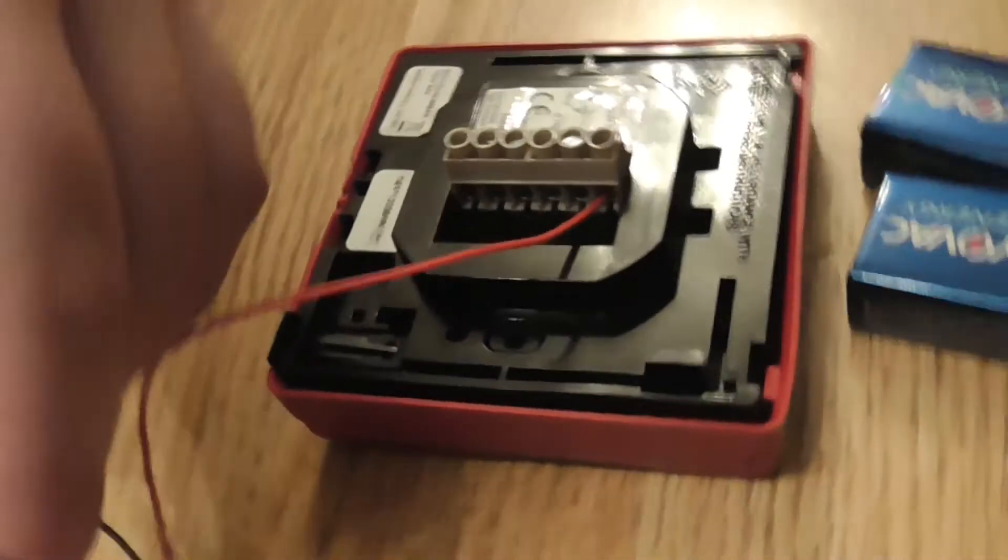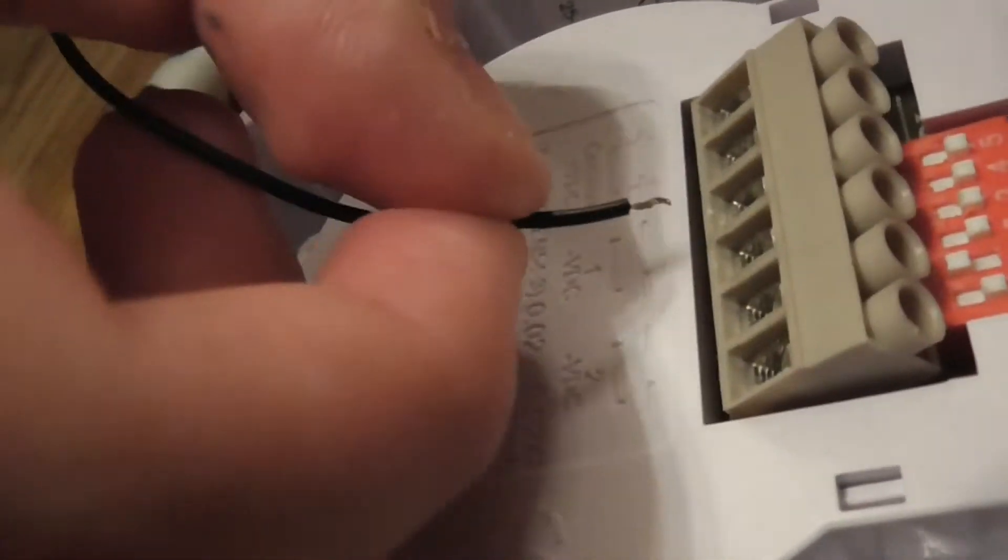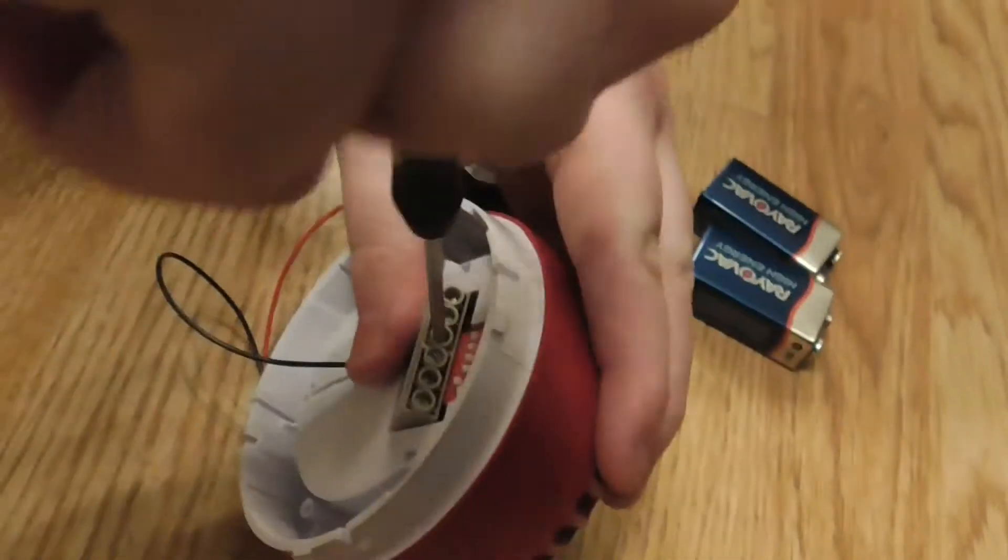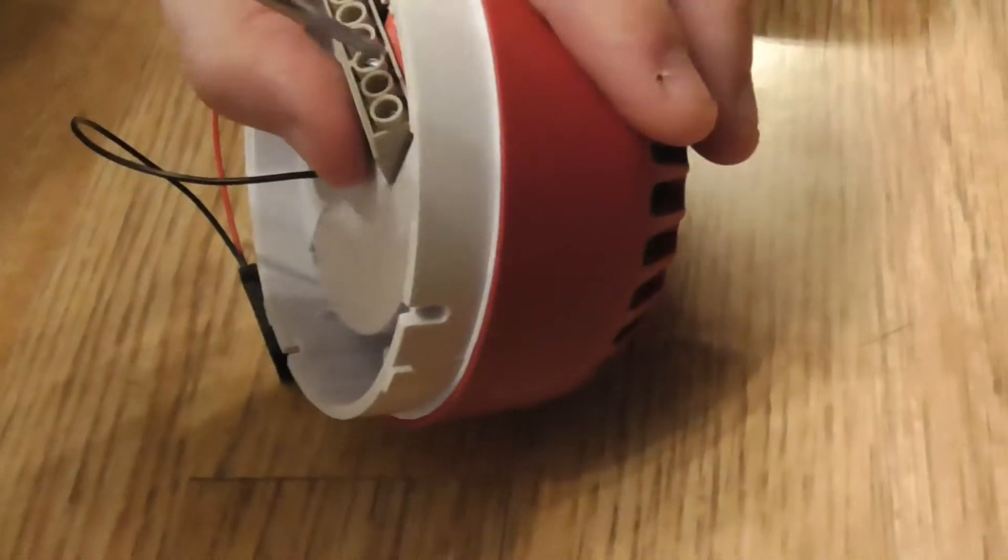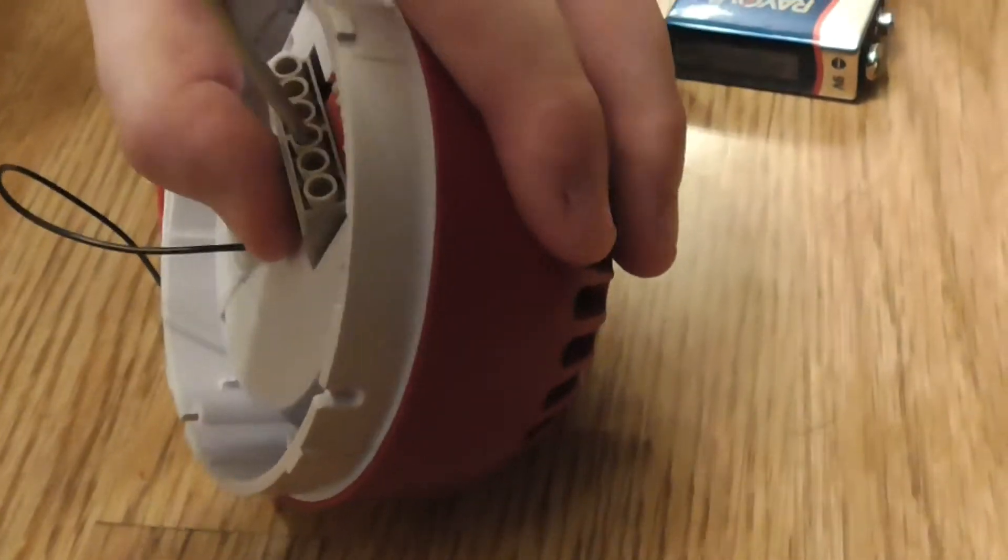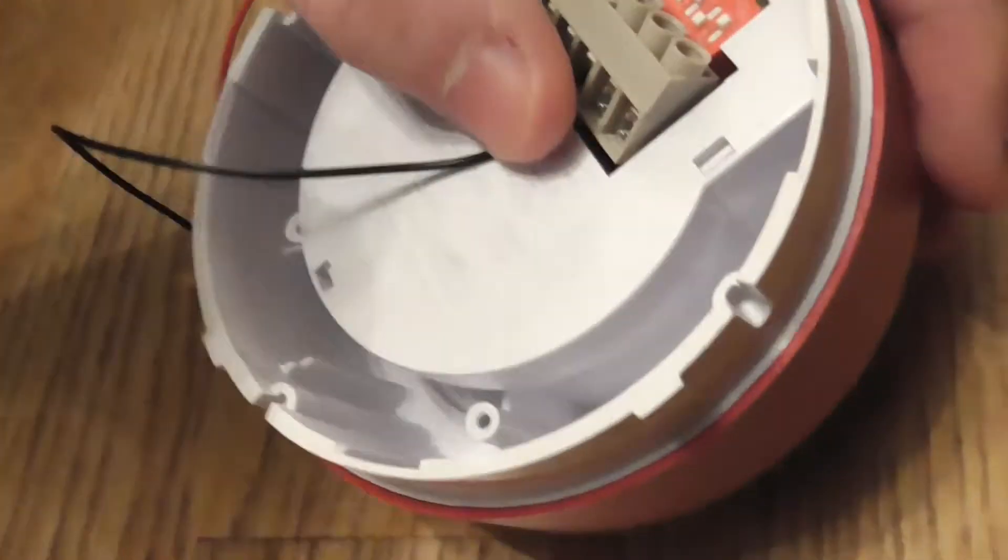And then next we're going to wire the negative to the sounder, so I'm going to fit the negative in here. Make sure there's enough copper, put the negative in there. Okay, there we go.